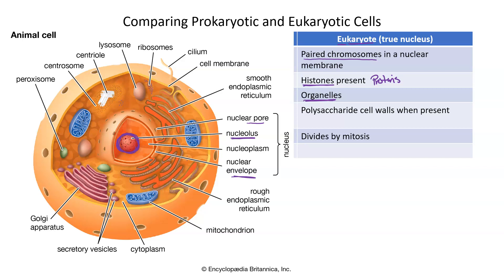Eukaryotes also sometimes have a cell wall — plants, fungus, and some single-celled eukaryotes are going to have cell walls. When they are present, they are always polysaccharide in nature. Plants are going to have the polysaccharide cellulose, while fungi and mushrooms are going to have chitin as their cell wall — but chitin is also polysaccharide in nature.